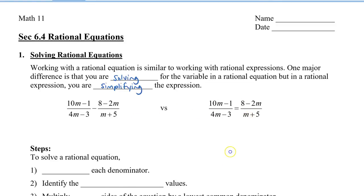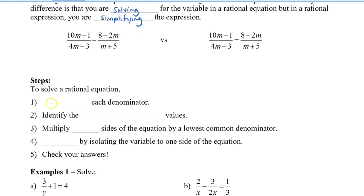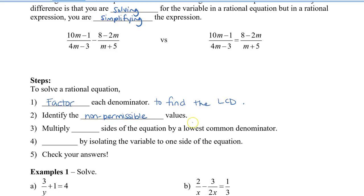To solve a rational equation, the first step, similar to simplifying, is you need to factor each denominator. The reason that we're doing this is to find the LCD — the lowest common denominator. Second, identify the non-permissible values, and you do this by looking in the denominator.